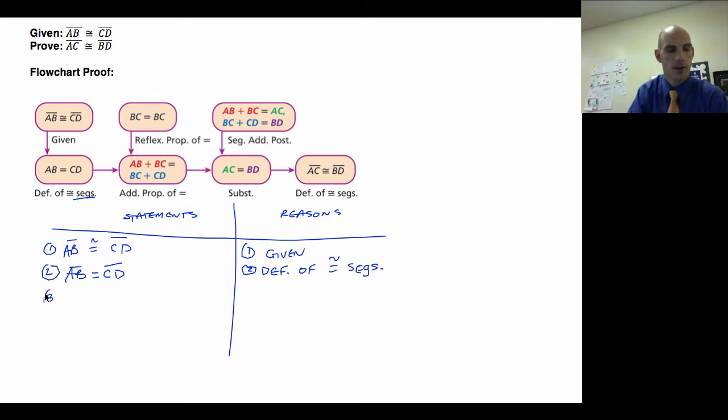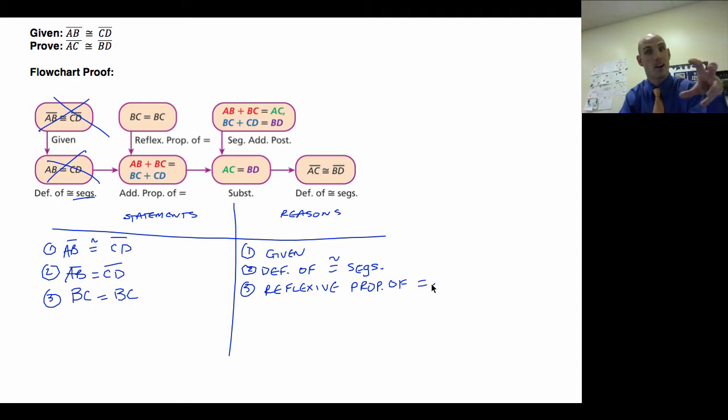And number three, where do I go with three? Well, since I've already used these two, I'm going to start upper left again of what I haven't used. So BC is equal to BC, and even without looking, I could see that. Same thing on both sides. It's going to be reflexive property. Reflexive property of equality, because there's the equal sign there. So that's what we're noticing.